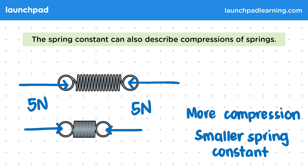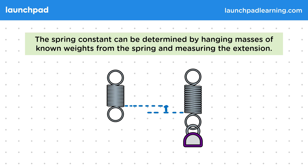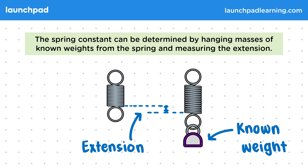The spring constant can be determined by hanging masses of known weights from the spring and measuring the extension. We hang a weight from the spring, as this is a measurable extension force. We must be careful not to add too much weight that could cause inelastic extensions. We measure the extension by looking at the change in position of the bottom of the spring, then if we divide the force applied by the extension of the spring, we get the spring constant.